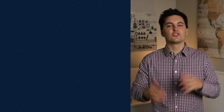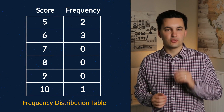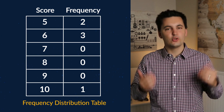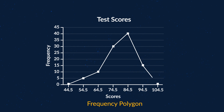When using descriptive statistics, we often see researchers use a frequency distribution table. This allows them to see how often sets of data occur. For example, when looking at a frequency distribution table displaying quiz scores, I can see that three students got a 6, one student got a 10, and two students got a 5. Researchers will also utilize a frequency polygon, which is a visual representation of a frequency distribution table. This highlights different connections between points on a scatter plot.